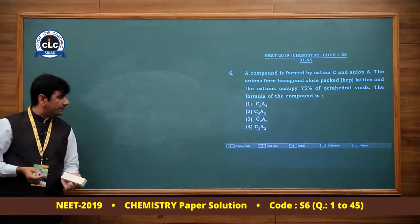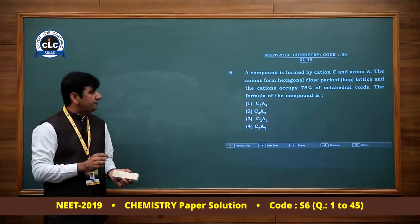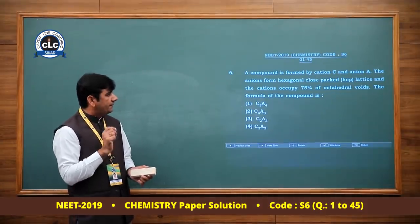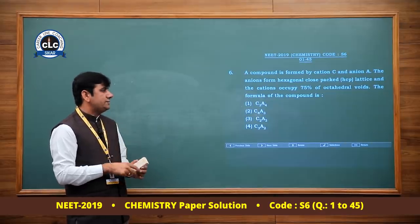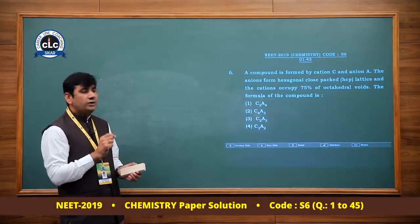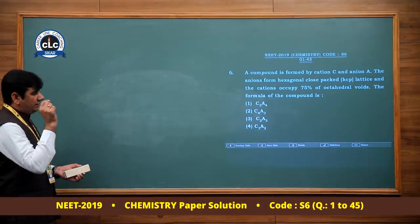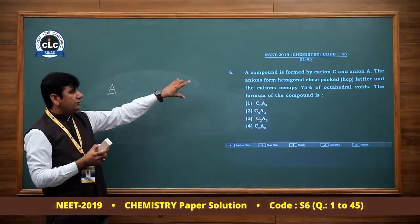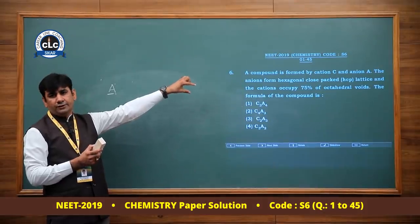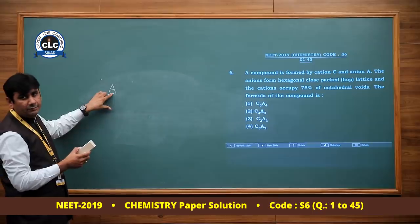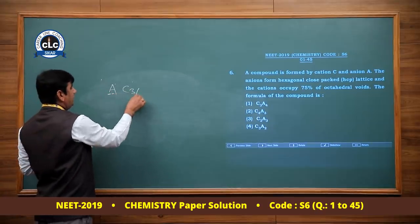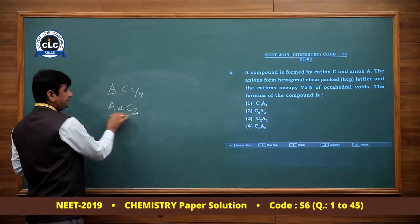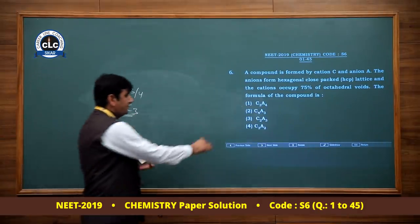Question number 6: A compound is formed by cation C and anion A. The anions form hexagonal close packing lattice and the cations occupy 75% of octahedral voids. Number of anions = A, number of cations = 75% of A = 3/4 A. The simplest ratio is A:C = 4:3. Option 1 is correct.